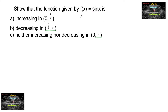Show that the function f(x) = sin x is: first, increasing on (0, π/2); second, decreasing on (π/2, π); and third, neither increasing nor decreasing on (0, π).